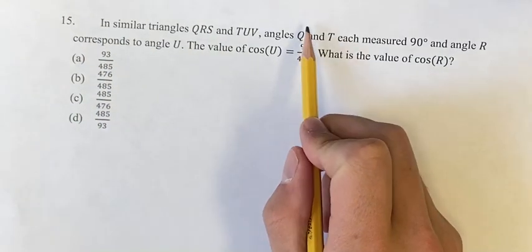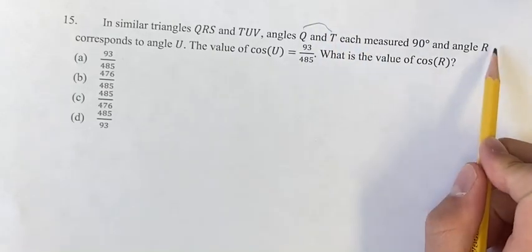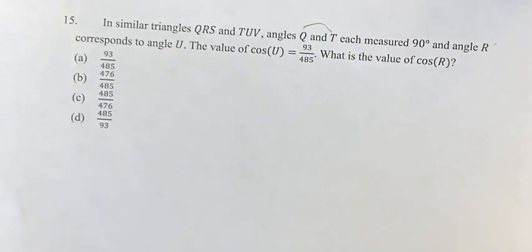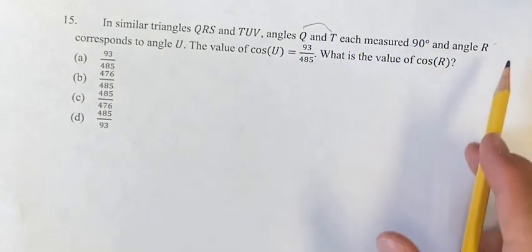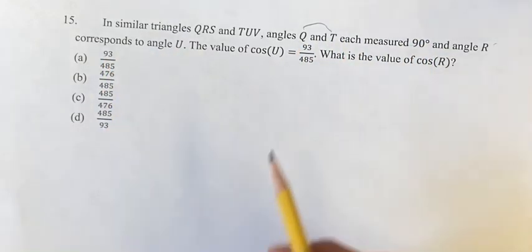Since we have two pairs of angles, Q and T, and then R and U, that are of equal measure—Q and T are 90 degrees, and angle R corresponding to angle U means that they're equal.